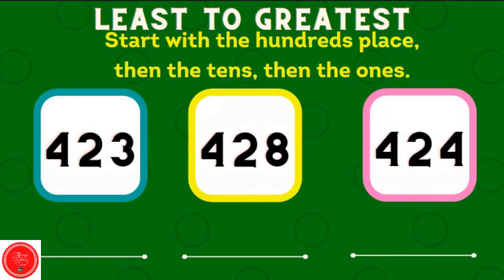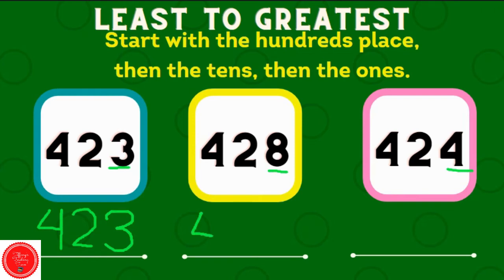Now these numbers have the same numbers in the hundreds and tens place. So let's look at the ones place. Which number has the smallest number in the ones place? 423. Then 424. Then 428.